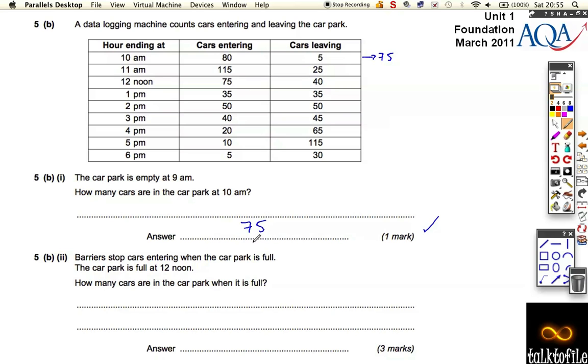Barriers stop cars entering when the car park is full. The car park is full at 12 noon. How many cars are in the car park when it's full? Well, we've got to work out how many are there. So if there was 80 cars came in and 5 cars left at 10 o'clock, then by 11 o'clock, another 115 cars have come in but 25 have left. So we have to do 75 plus 115 and then we have to take away 25. So really, that comes to a total of 165.